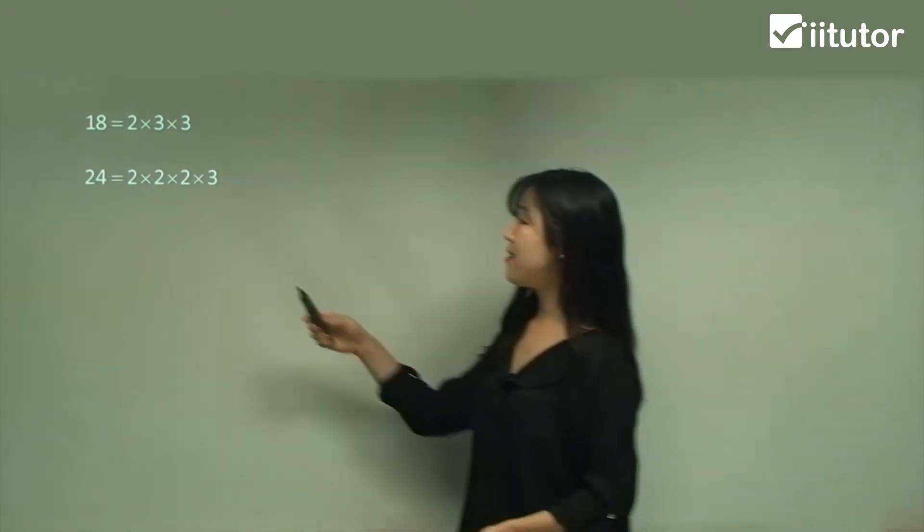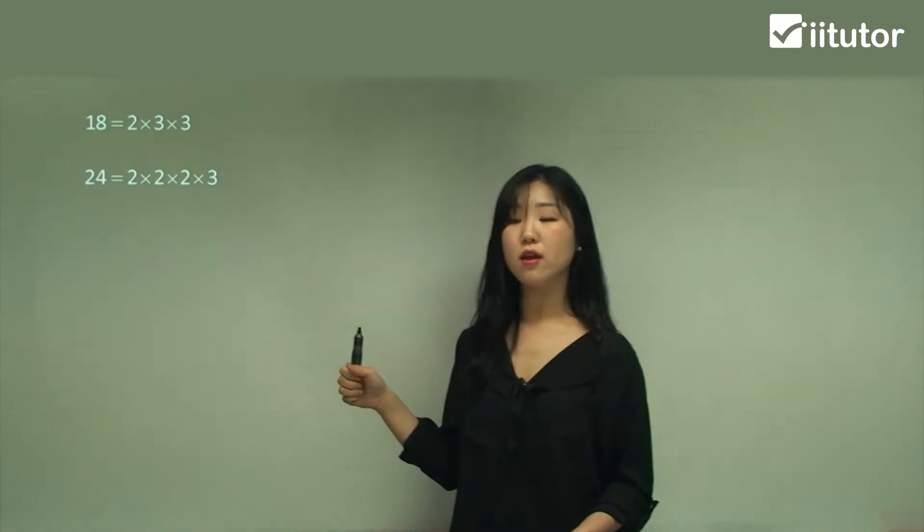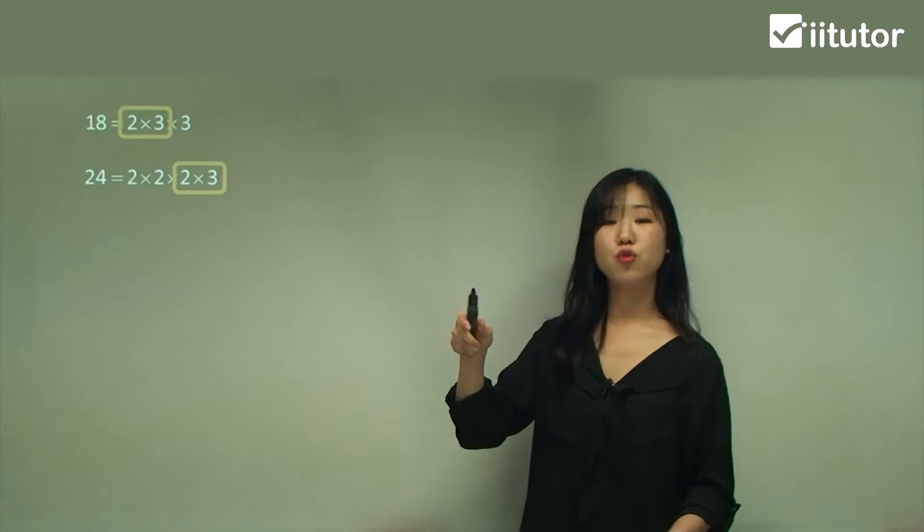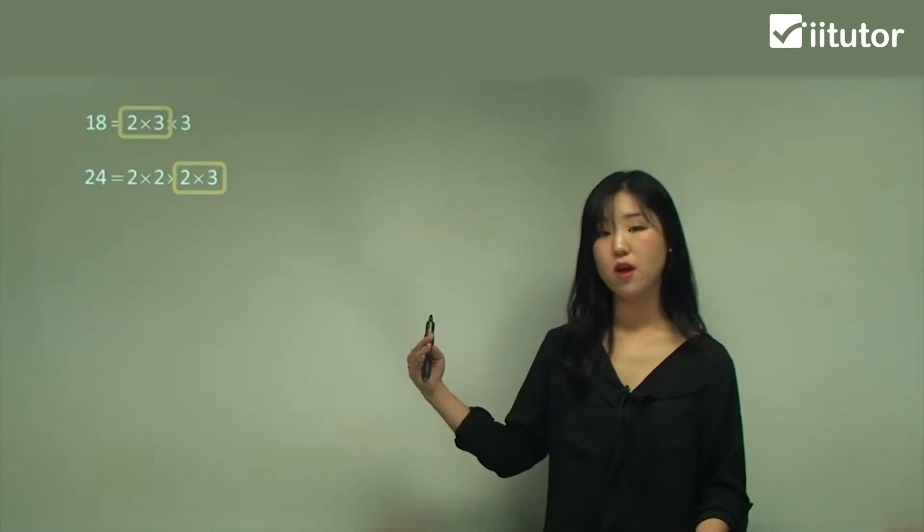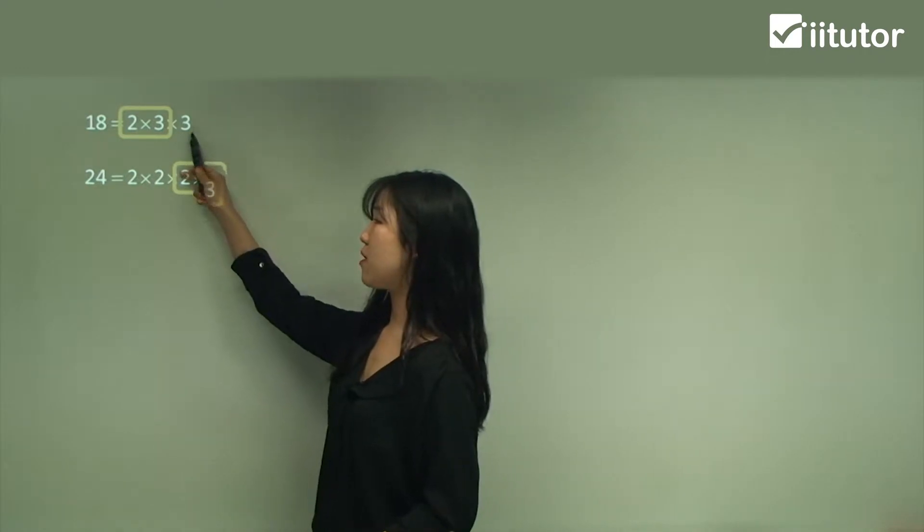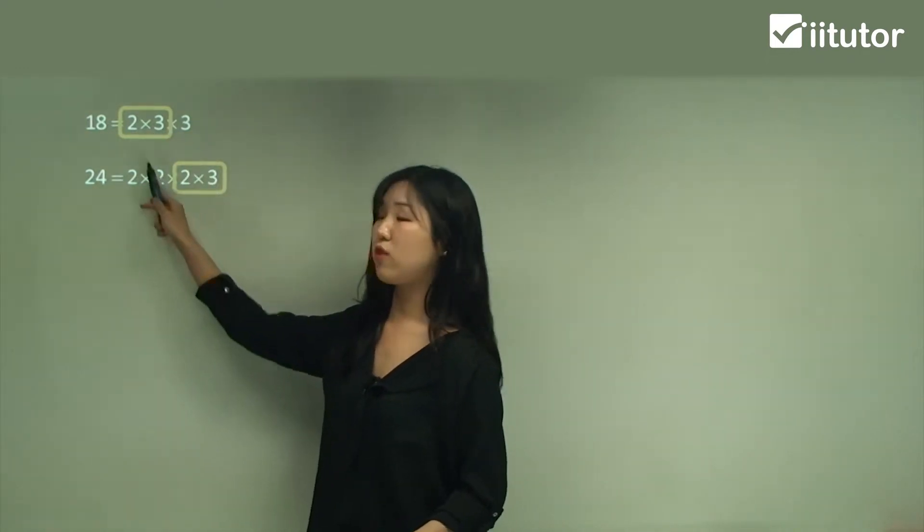I've broken it down into my prime factors, and once I've done that I find what's common. I can see that 2 is common, these two are common, and a 3 is also common. So I can say that 2 times 3 is common for both. I can't add an extra 3 because there's only one 3 here, and I can't add an extra 2 because there's only one 2 here.